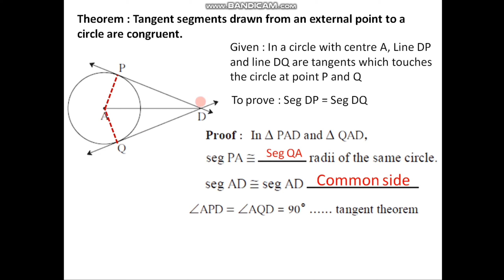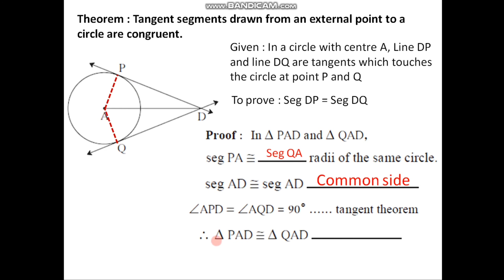The measure of angle APD and the measure of angle AQD are each 90 degrees because of the tangent theorem. Since DP is the tangent and PA is the radius, and a tangent is perpendicular to the radius, angle APD is a right angle — so angle APD equals 90 degrees. In the same way, angle AQD is also 90 degrees. As both triangles are right-angled, and we have shown that the hypotenuse and one side of one triangle are congruent to the hypotenuse and corresponding side of the other triangle, the two triangles are congruent by the hypotenuse-side test. Therefore, triangle PAD is congruent to triangle QAD by the hypotenuse-side test.